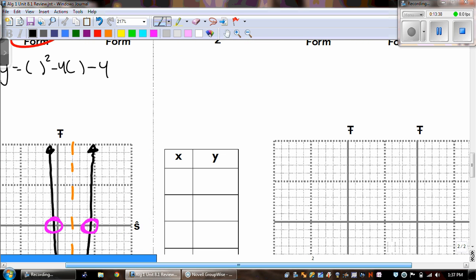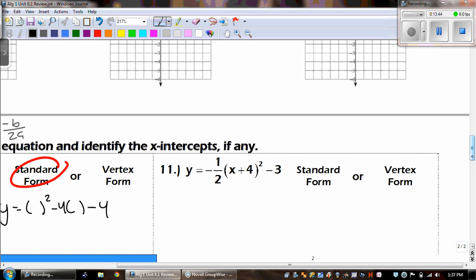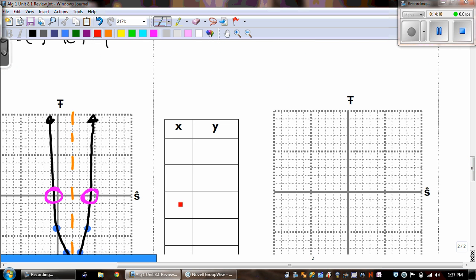Alright. Let's move on to number 11. Is this in standard form or vertex form? Well, this one. It's kind of acting up on me. This is in vertex form because it has the parentheses out there. And if it's in vertex form, that means I know what my vertex is right away because we take the opposite of 4 and then that stays the same. So right away, I know my vertex is (-4, -3).